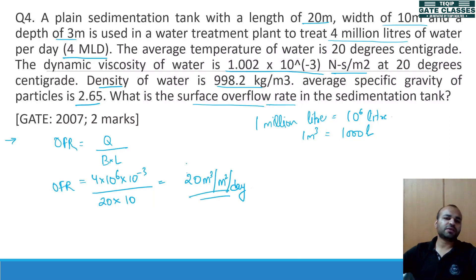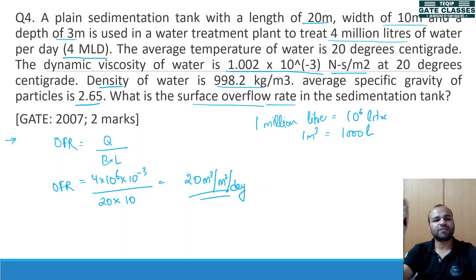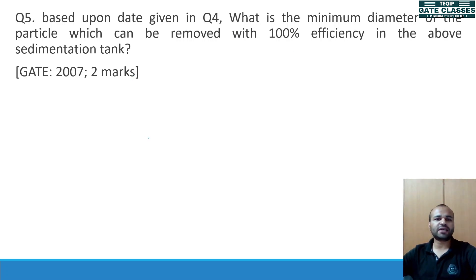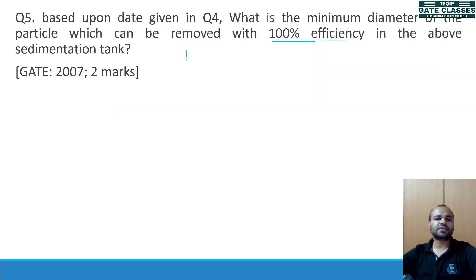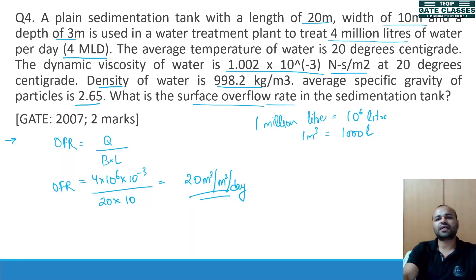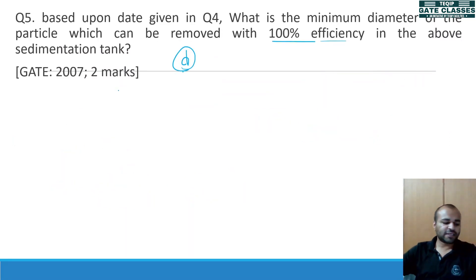I hope everyone has understood - quite simple. The surface overflow rate for the sedimentation tank is discharge divided by surface area, as per definition. Moving on, based upon the data from question 4, what is the minimum diameter of particle which can be removed with 100% efficiency? We need to find the concerned particle size D, and we will use Stokes law.